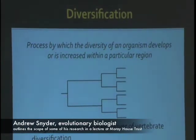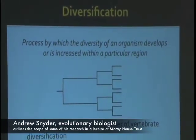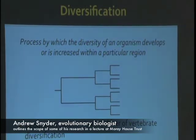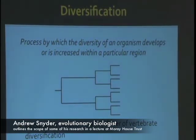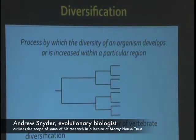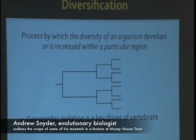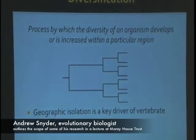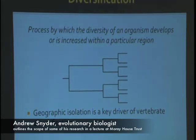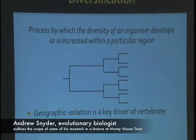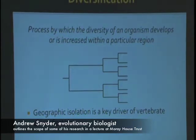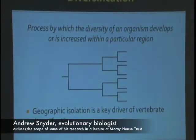Broadly, diversification is the process by which an organism is able to become genetically distinct from others and become new species, or become genetically distinct but still remain the same species, potentially in a new area. What this represents right here is what is called a phylogenetic tree, and that is essentially the crux of evolutionary biology. With each of these branches, you have the formation of new species or new lineages of species.